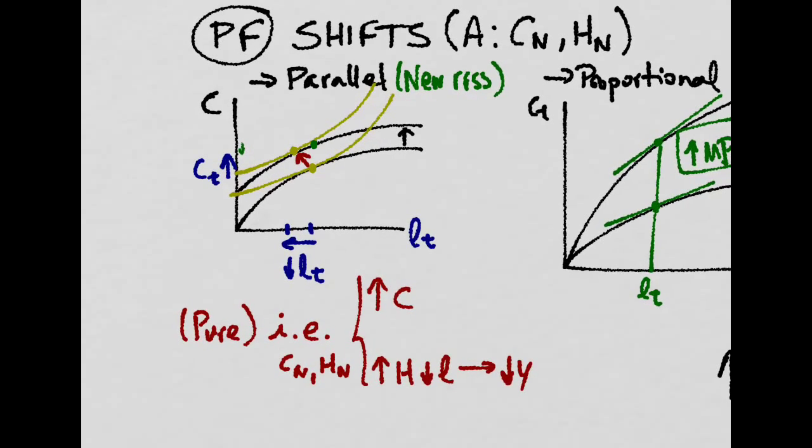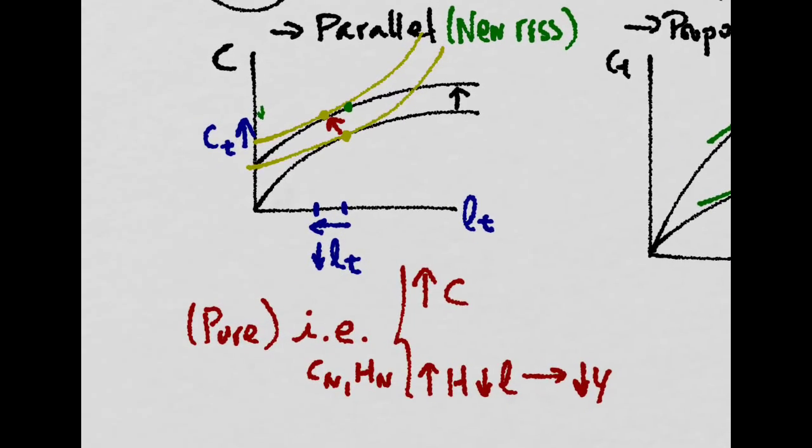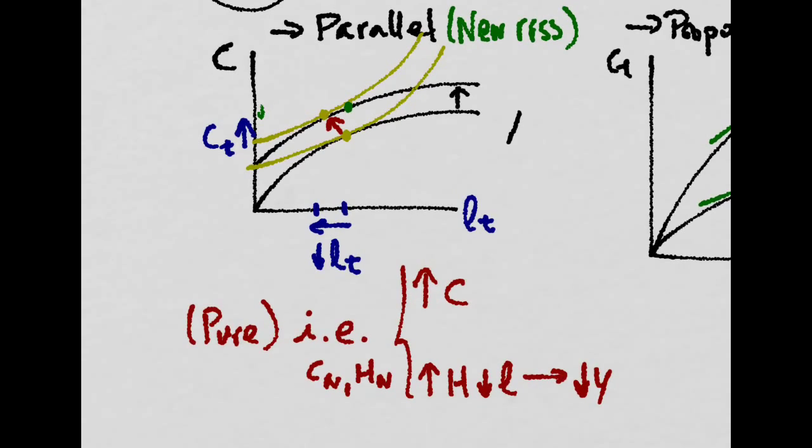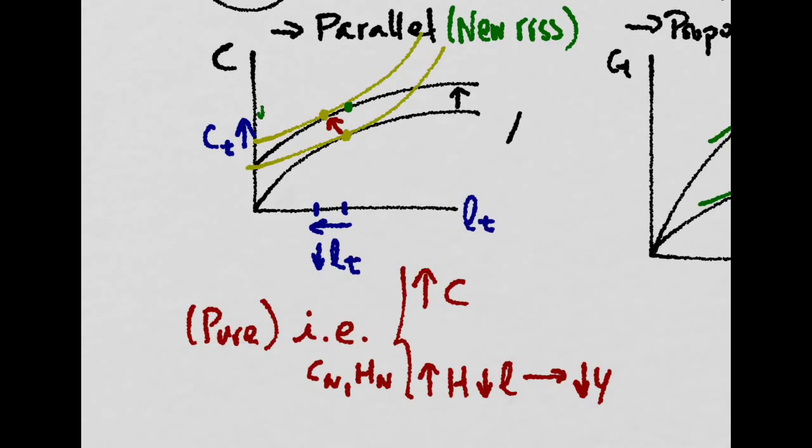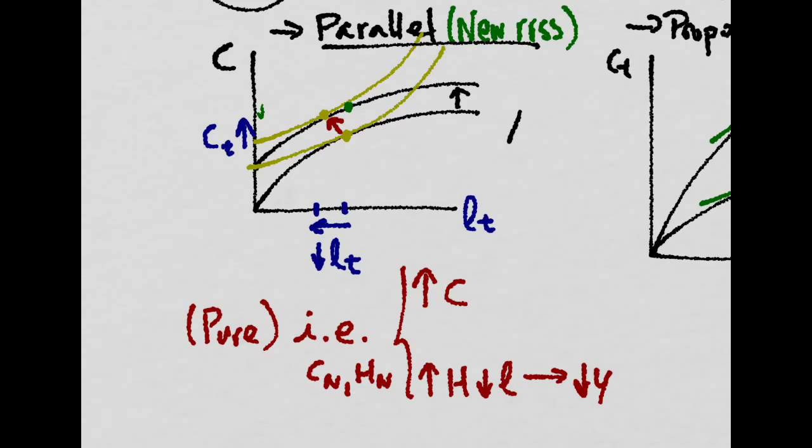Now, imagine that both consumption and leisure are normal goods. If there is a new resource that is discovered in the economy, then there would be a parallel shock in the production function.